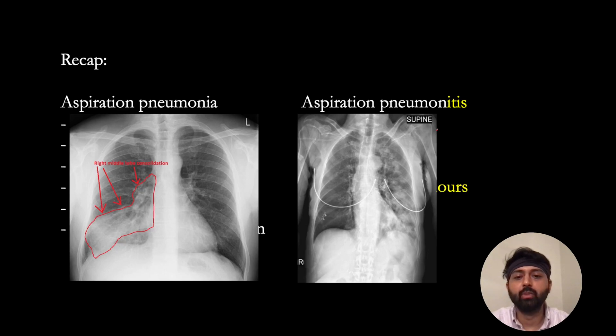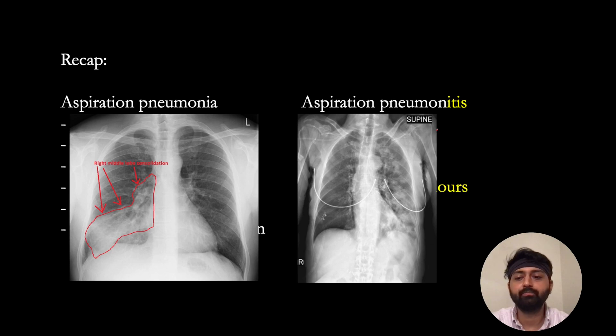The biggest thing for board exams is looking at the x-ray. With aspiration pneumonitis you see infiltrates diffusely, whereas in aspiration pneumonia it's much more confined to one lobe.